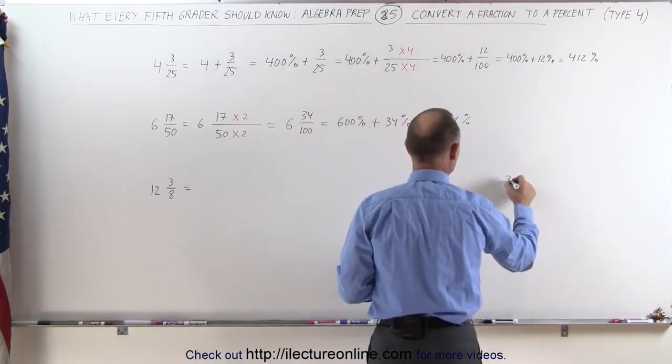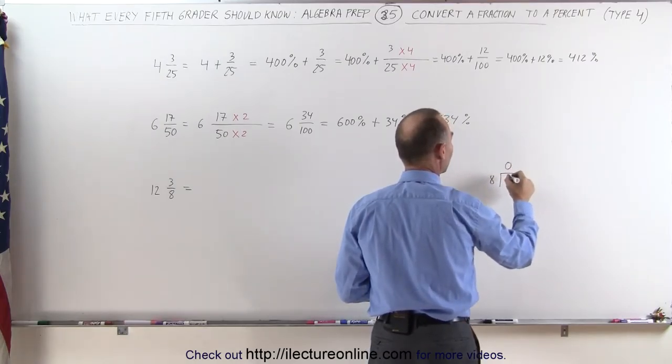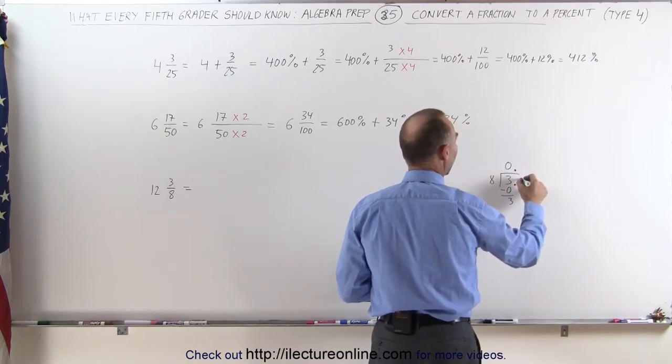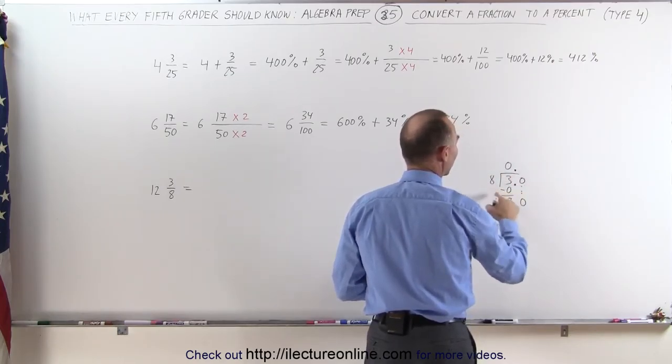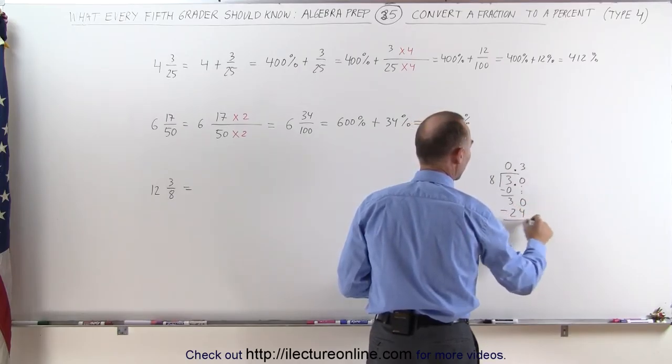We divide 3 by 8 and see what we get. 8 goes into 3, 0 times, remainder is 3. Put a decimal place there, put a decimal place there, add a 0. 8 goes into 30, 3 times. 3 times 8 is 24, remainder is 6.